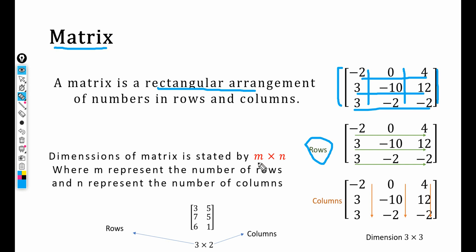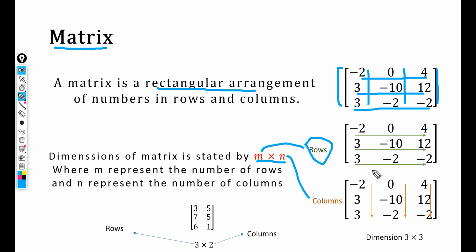A matrix is defined by its dimensions, denoted by m × n, where m represents the number of rows and n represents the number of columns. For example, in this matrix we have three rows and three columns, so the dimension of this matrix is 3 × 3 — this is known as a 3 × 3 matrix.